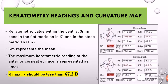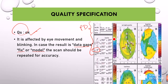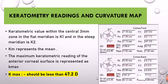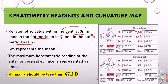The third thing to examine is the keratometry readings and the curvature map. We have K1 and K2. K1 represents the central 3mm zone of the flat meridian, so the keratometric value of the flat meridian is called K1, and the steeper meridian is K2, also representing the central 3mm zone of the cornea. When you take the mean of K1 and K2, what we get is Km — the mean of K1 and K2.